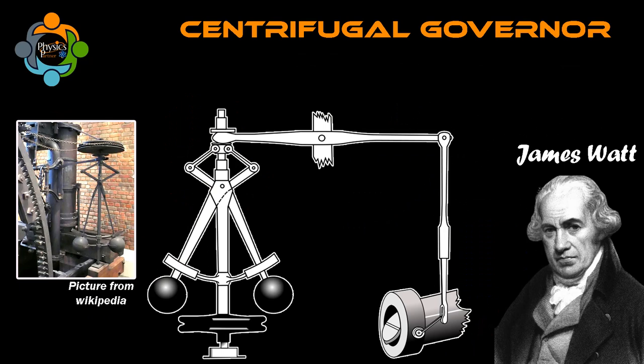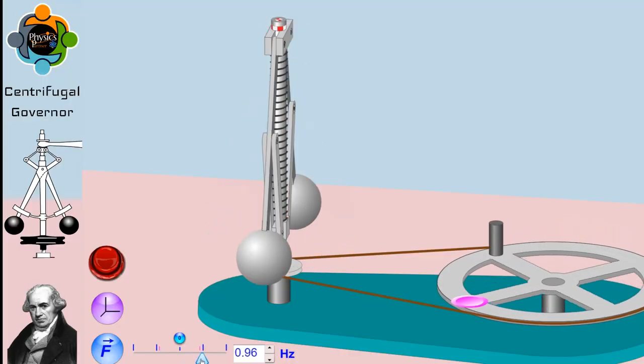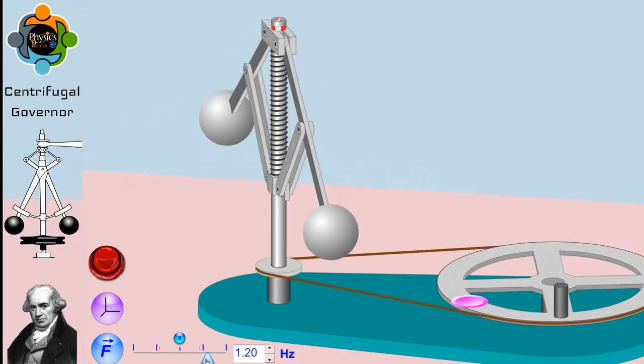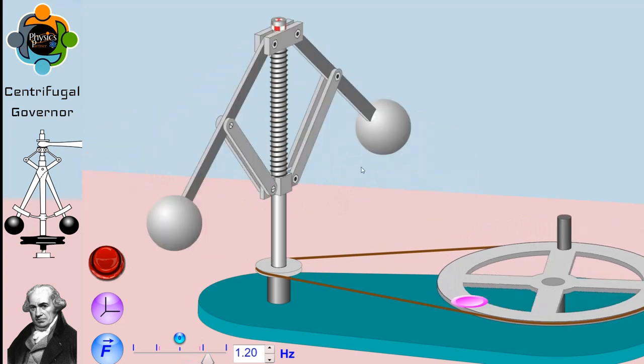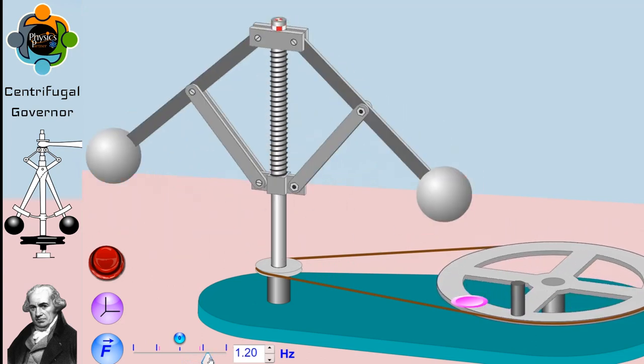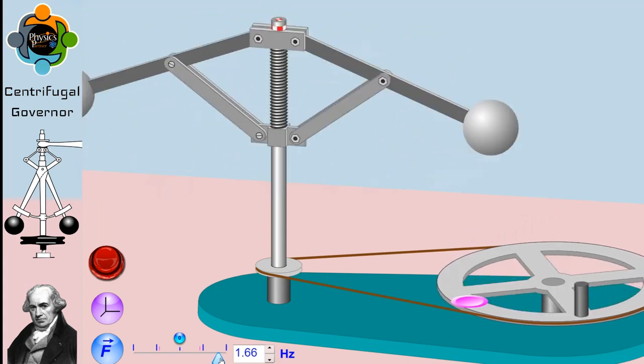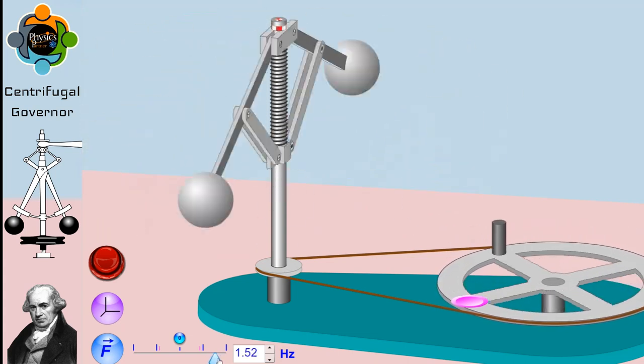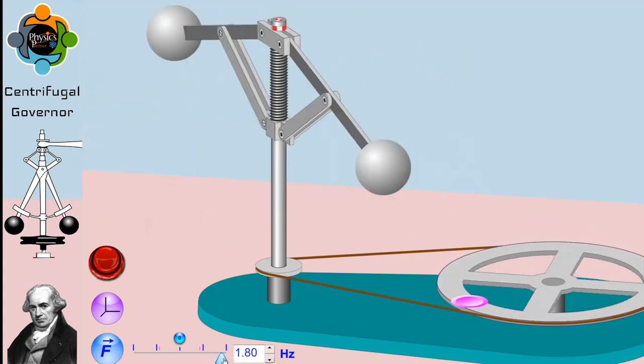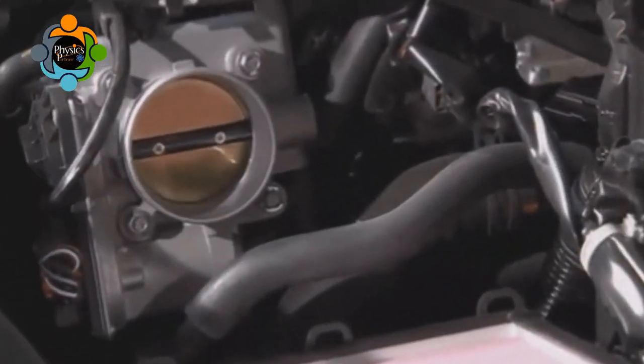It was first developed by James Watt in the late 18th century for use in a steam engine. The basic idea behind the centrifugal governor is that as the engine speed increases, centrifugal force causes two weighted arms to move outward. This movement is then used to control the engine's throttle, which regulates the amount of fuel and air going into the engine.